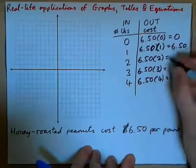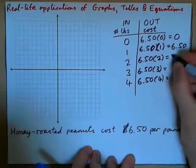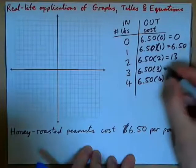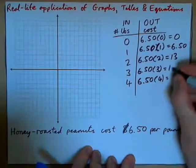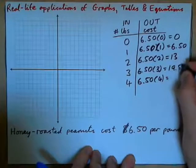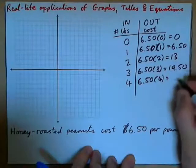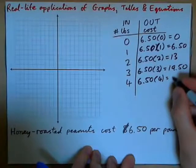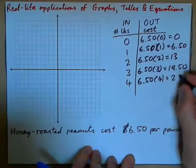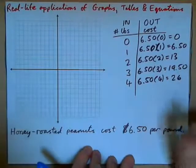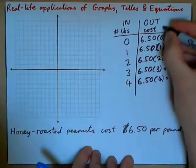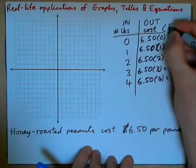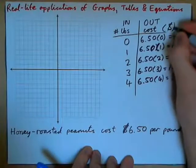This is going to be $13.00, this is going to be $19.50, and then this is going to be $26.00. Cost is in dollars.